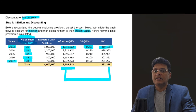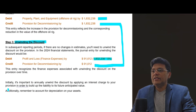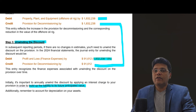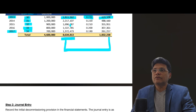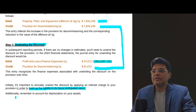I will show you through an Excel sheet calculation. It is important to annually unwind the discount by applying an interest charge to your provision in order to build up the liability to its future anticipated value. Eventually this will equal 8,634,813. But once all payments are made, the total provision balance will be zero. Additionally, remember to account for depreciation on your asset.